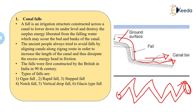The falls were first constructed by the British in India in the 19th century. The types of falls include: the ogee fall — similar to the ogee spillway studied in Chapter 3, which dissipates excess energy from the upstream side of a dam and safely discharges water downstream. Other types include the rapid fall, stepped fall, notch fall, vertical drop fall, and glacius type fall.